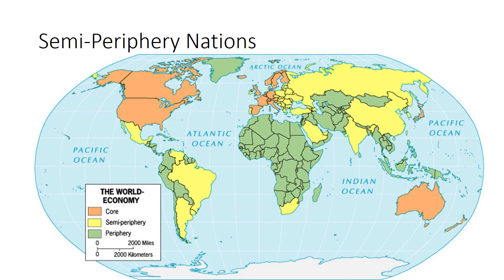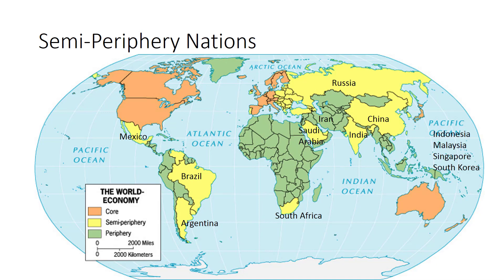Current semi-periphery nations — which will be a little different than the color scheme on this map, but it's close — include Mexico, Brazil, Argentina, China, Russia, India, Iran, Saudi Arabia, South Africa, and several South Pacific nations.